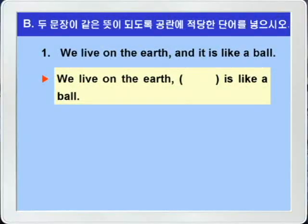벌써 A번의 모든 문제를 다 풀어보았습니다. 이제 B번을 풀 차례인데요. B번은 두 문장의 뜻이 같아지도록 빈칸을 각각 한 단어 혹은 두 단어로 채우는 문제가 되겠습니다. 그럼 1번부터 풀어보죠. 'We live on the earth and it is like a ball.' / 'We live on the earth blank is like a ball.'